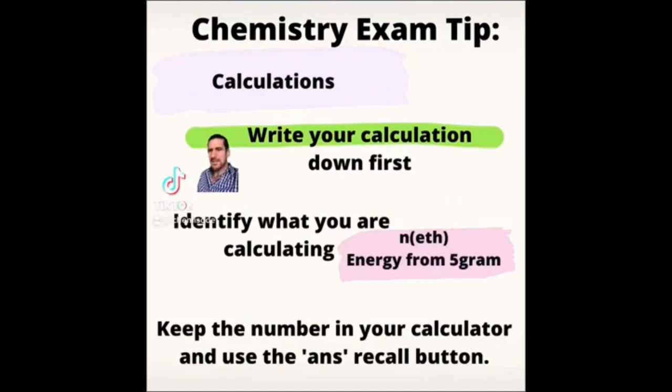Chemistry exam tip number 12. This one's about calculations in chemistry. Now a massive issue that people tend to have is they rush through calculations and they don't actually write down what they're doing. In a chemistry exam, it is crucial that before you go and reach for your calculator, you write down what you're planning on calculating first. That way, if you accidentally stuff up something in your calculator, at least the examiner knows what you meant to do. So therefore, they can give you marks for the idea of the calculation.